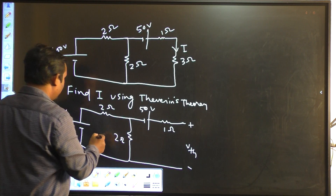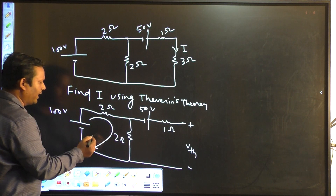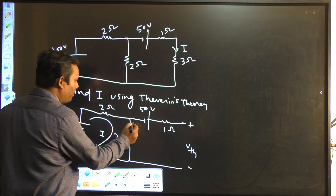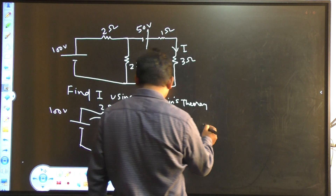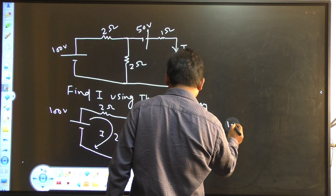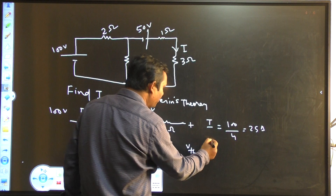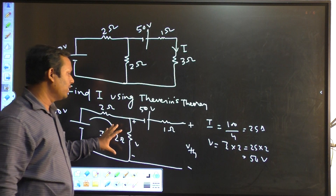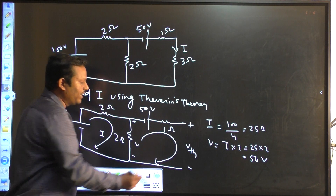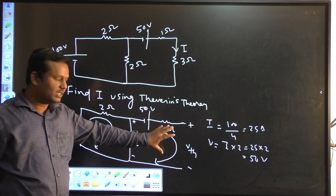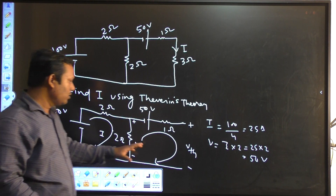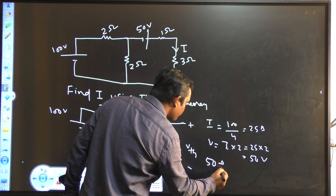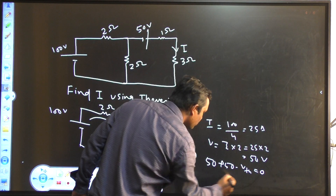So your Vth will be — the voltage across this element. This current I have to find first, then find the voltage across this 2 ohm resistor, then apply KVL in this loop and find the Vth. So I find this V first: this V will be this current into 2 ohm resistor. This current I will be simply 100 divided by 4, which is 25 ampere. And this V voltage will be this current I into 2 ohm resistor: 25 into 2, this will be 50 volt. So V will be 50 volt.